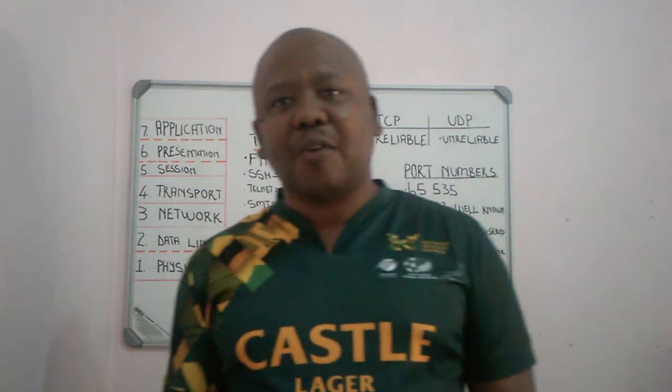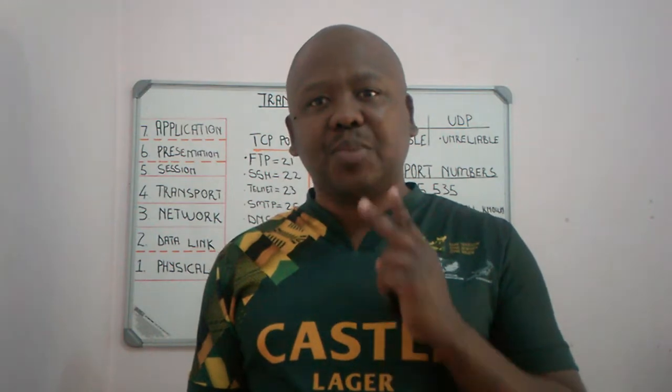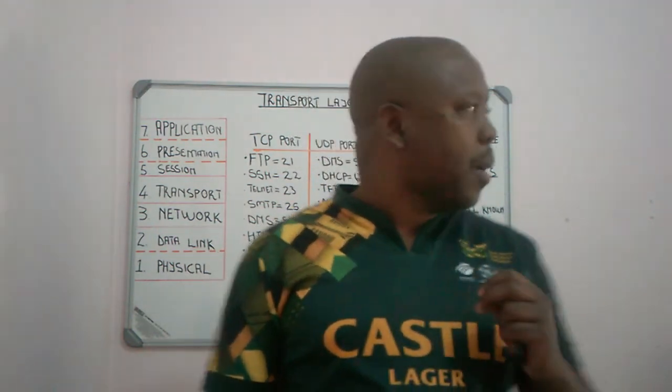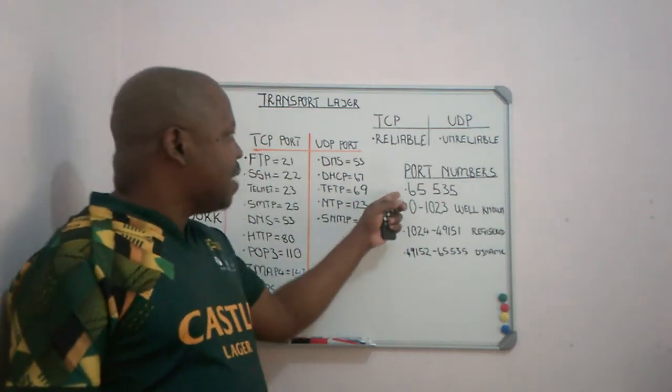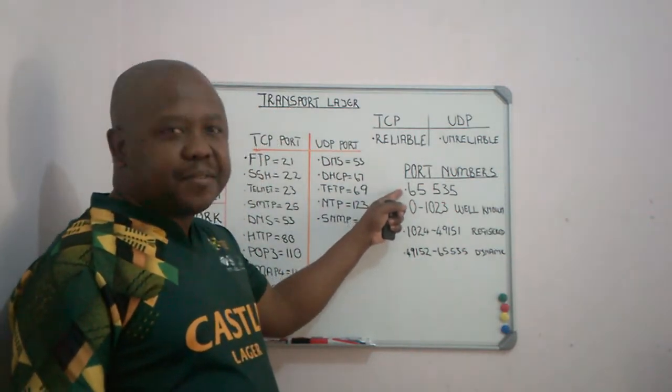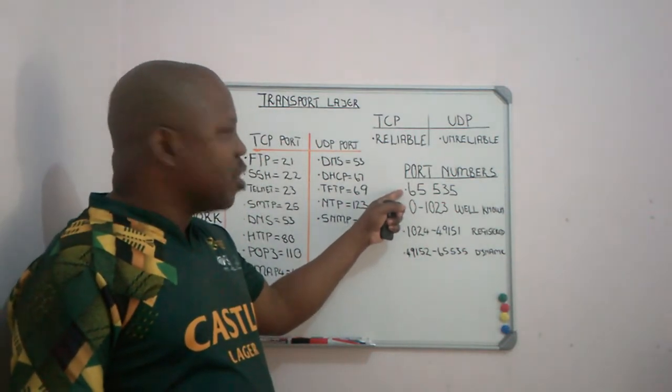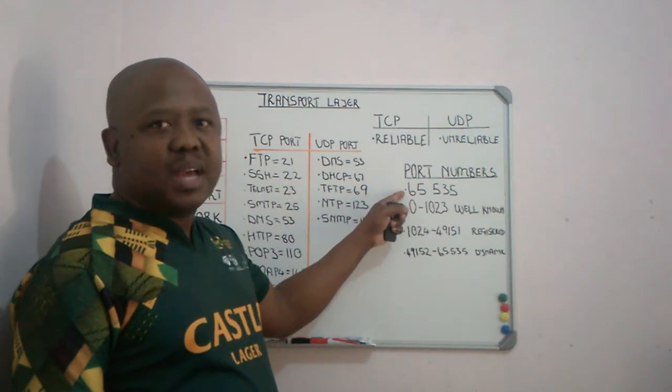We also have port numbers at layer 4 of our transport layer. We have TCP port numbers and UDP port numbers. Both have 65,535 port numbers per IP address, or per host.